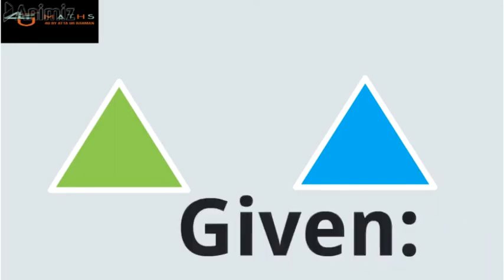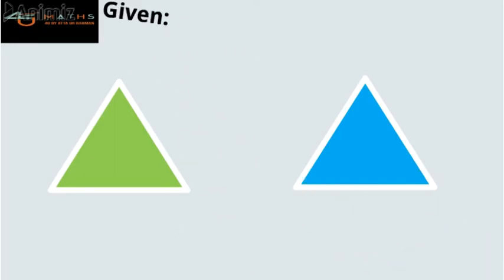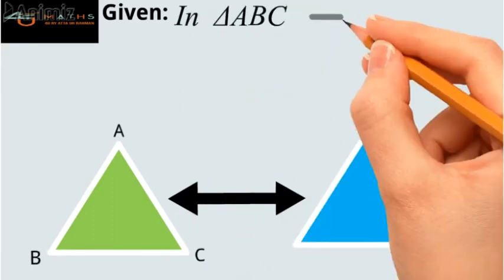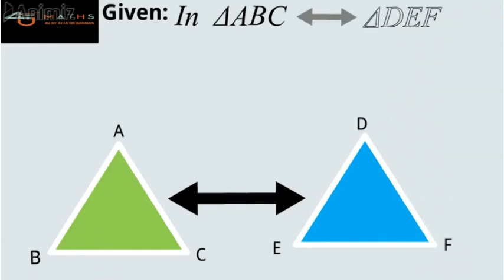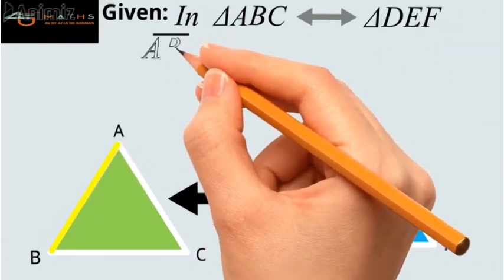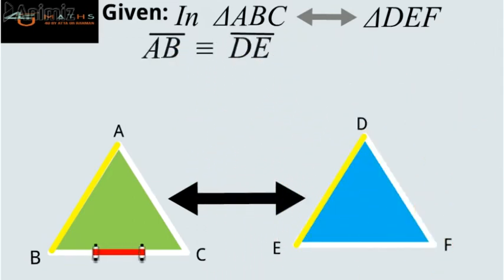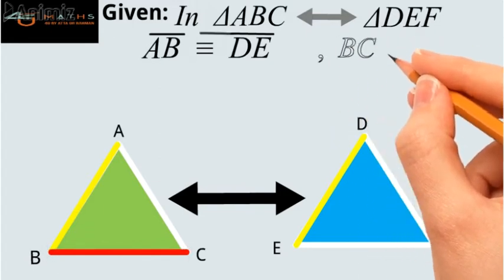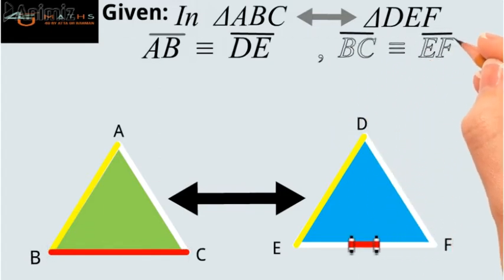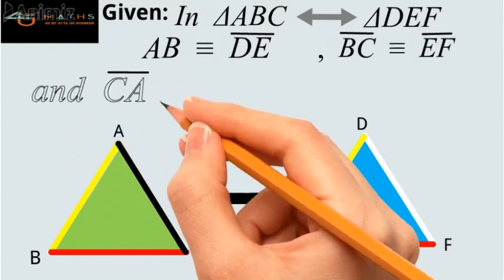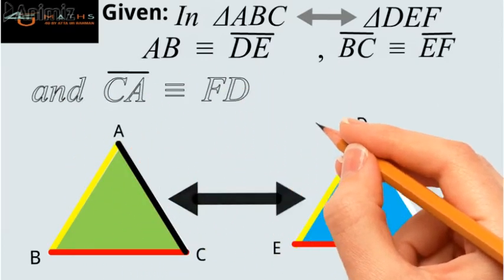Given. Here we have the correspondence of two triangles: triangle ABC and triangle DEF, in which side AB is congruent to side DE, side BC is congruent to side EF, and side CA is congruent to side FD.